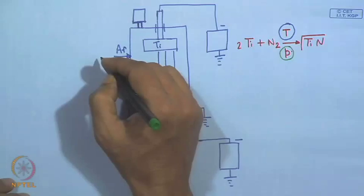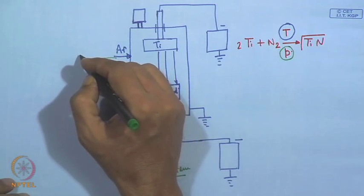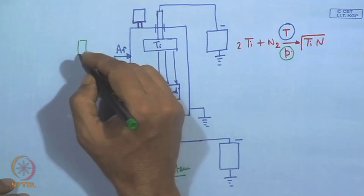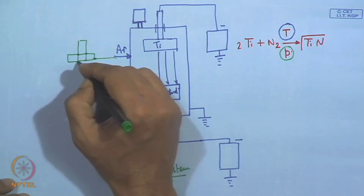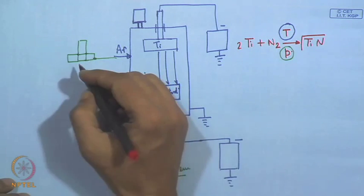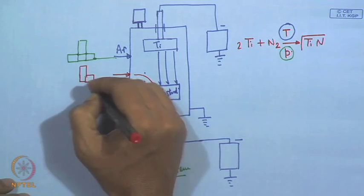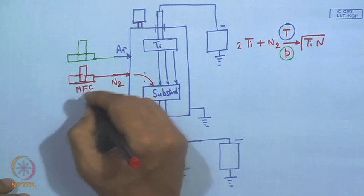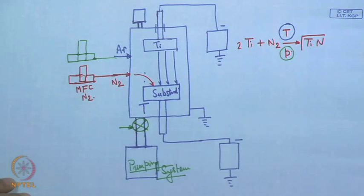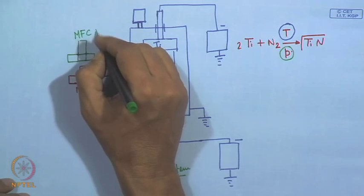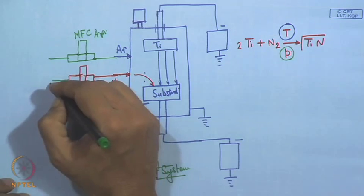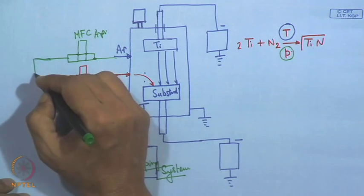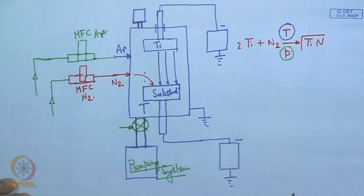A schematic of the apparatus shows that on the gas supply side, we must have mass flow controllers (MFCs): one MFC for nitrogen and one MFC for argon, with supply from the respective gas cylinders. This covers the basic requirements of the sputtering apparatus.